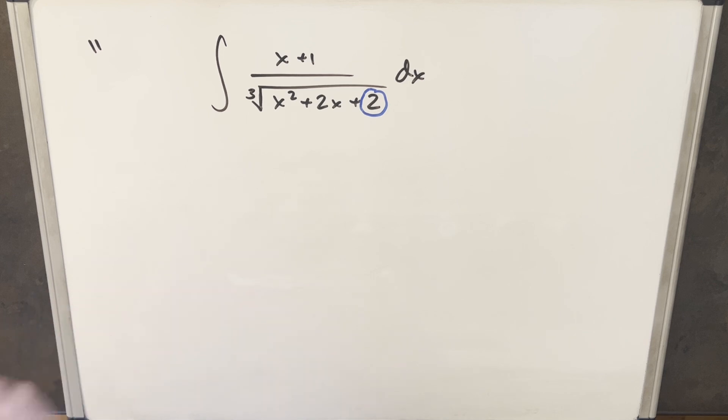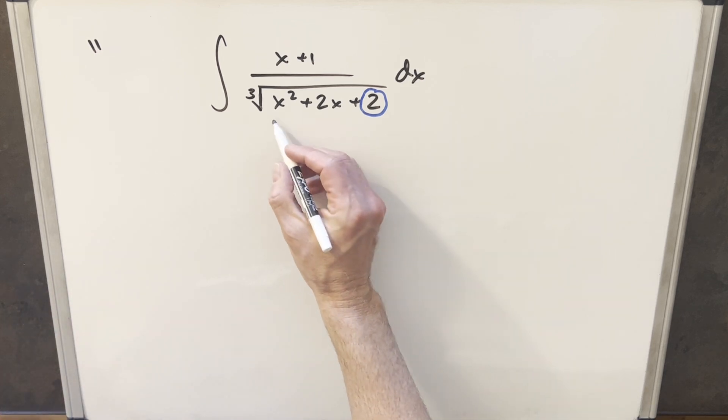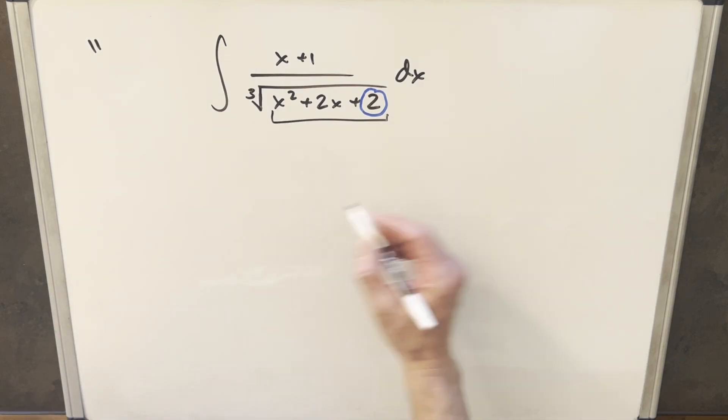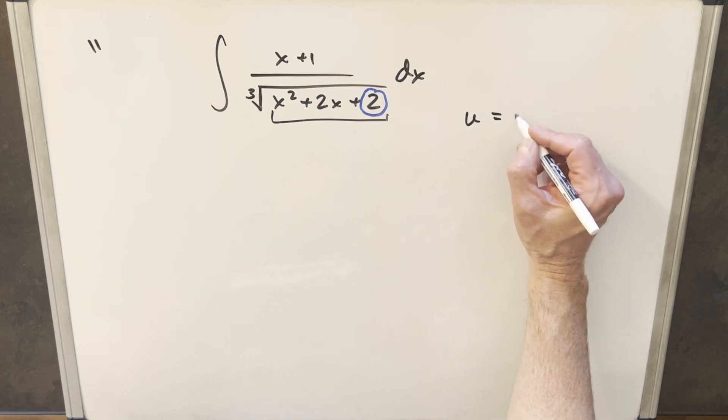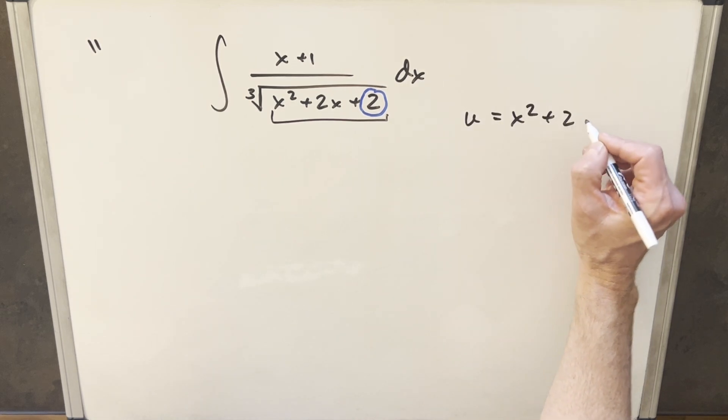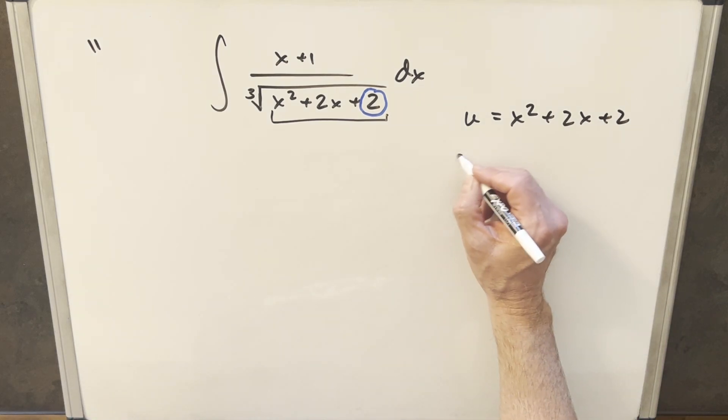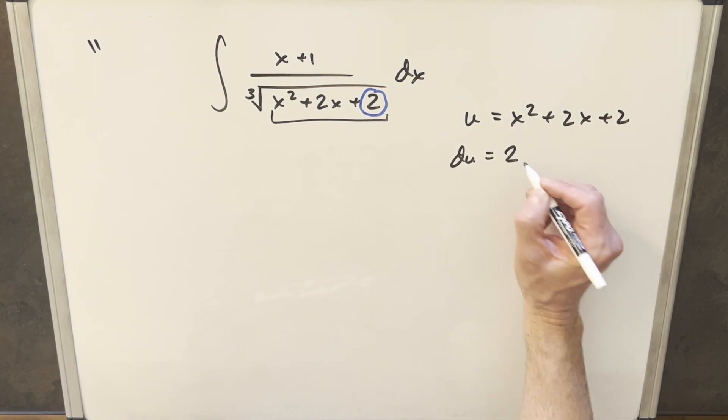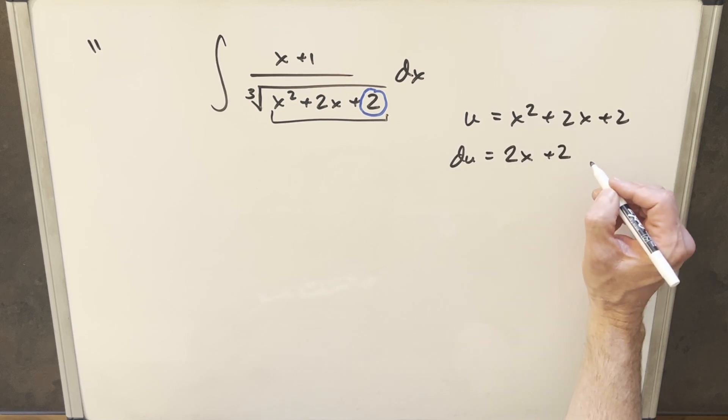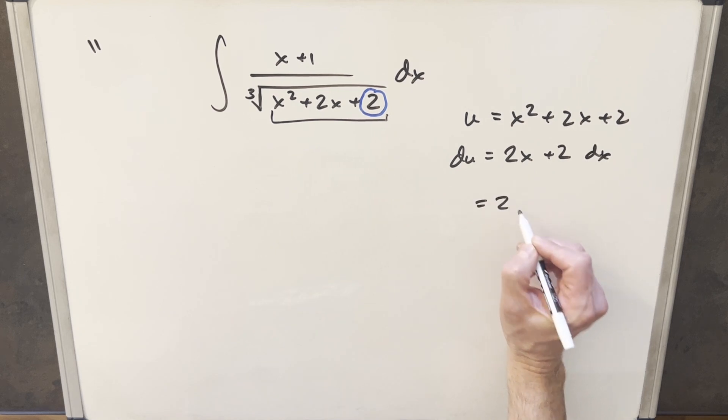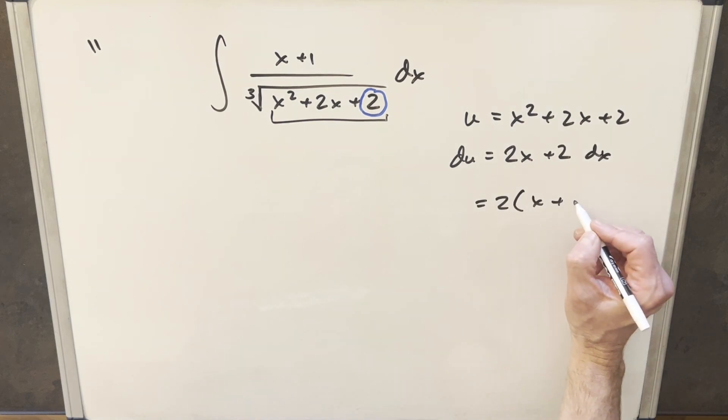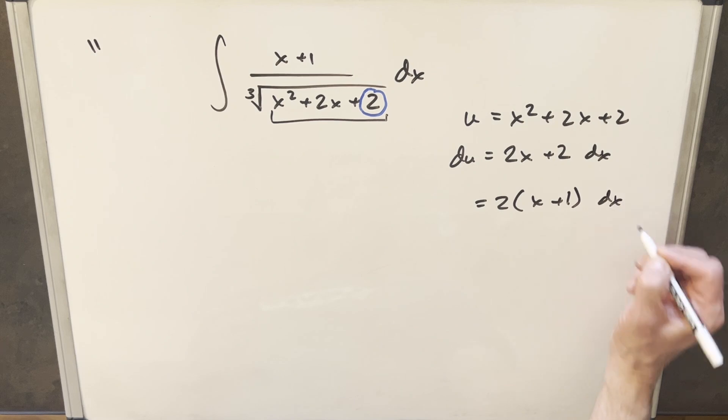What I want to do to start with is I want to do a u substitution on this, and I'm just going to make it everything inside the radical here. So I'm going to make my u equal to x squared plus 2x plus 2. Then I'll go ahead and take a derivative, so our du is just going to become 2x plus 2 dx. And then I think I will just factor a 2 out of that, just because I'll write it as 2 times x plus 1 dx.